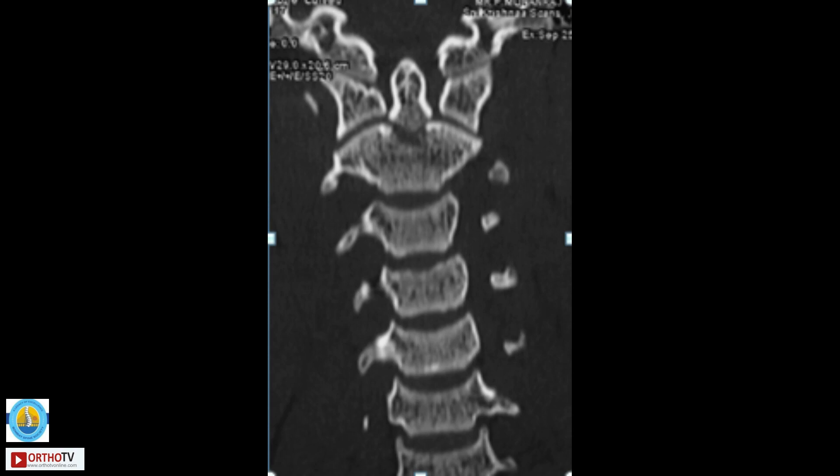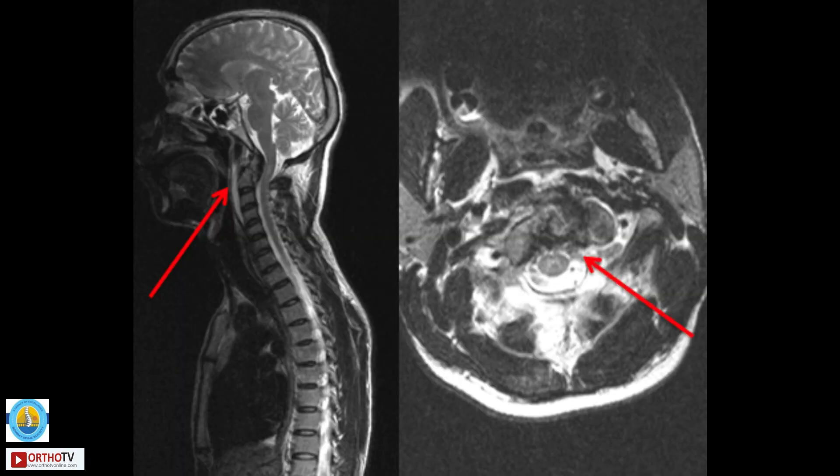The coronal cut shows the type 2 odontoid fracture with the normal relationship between the C1-C2 joint. Sometimes you may see avulsion of the transverse ligament, which would be a relative contraindication for this procedure. MRI may not have much significant role, but it may show disruption of the transverse ligament sometimes. In normal neurological status, the role of MRI is usually very limited.